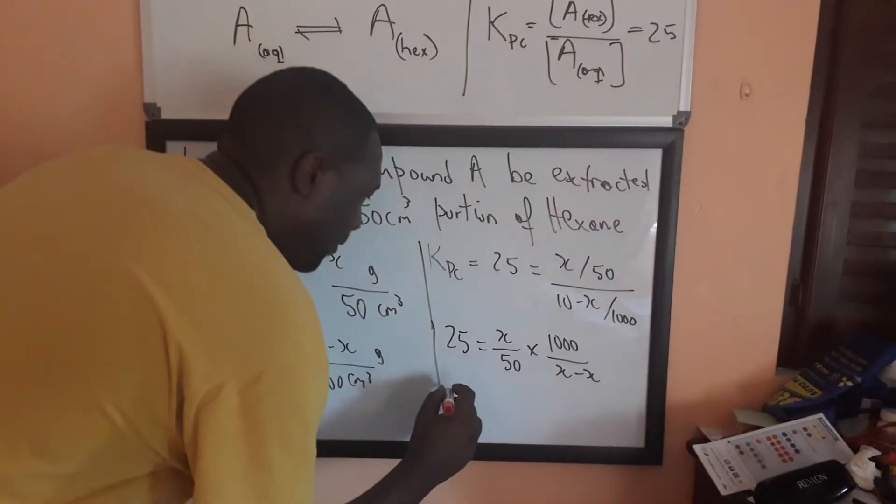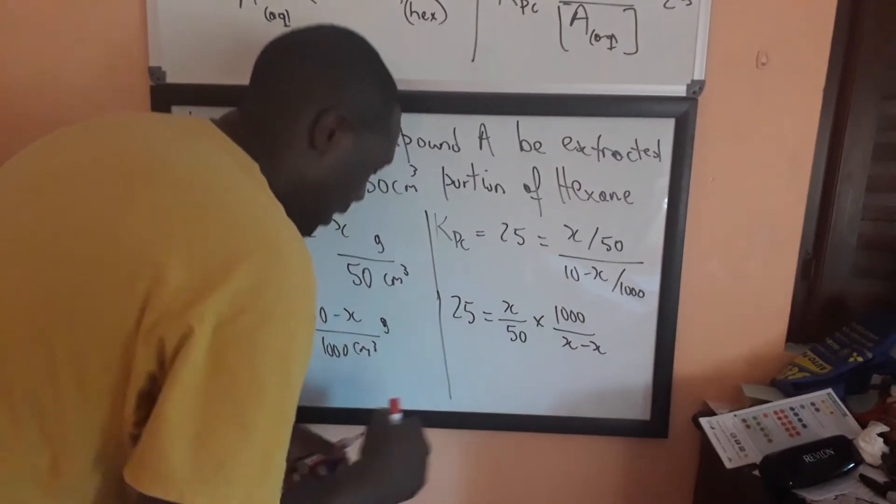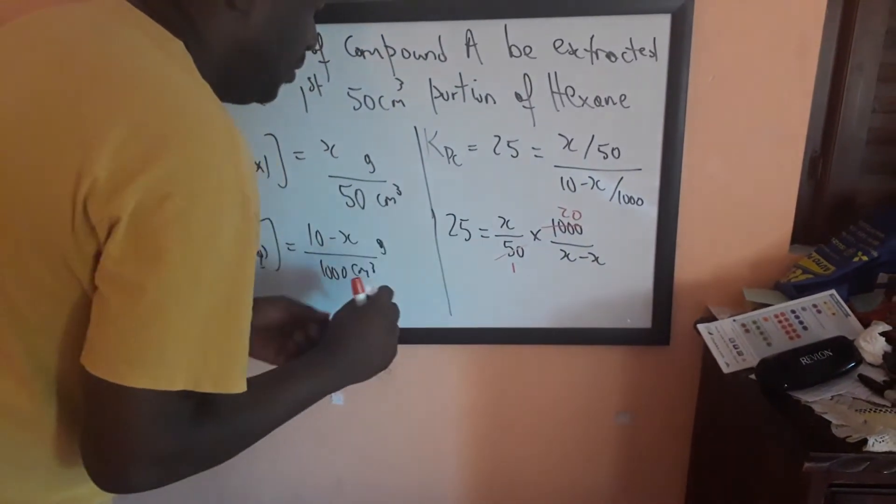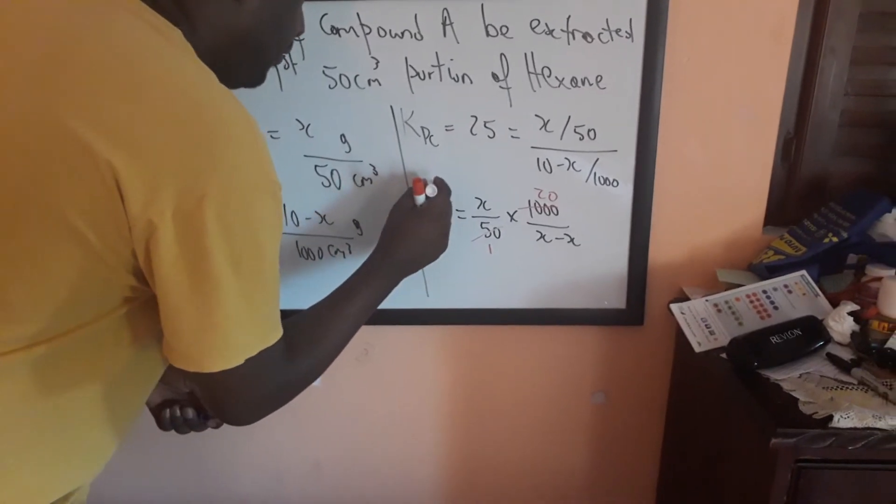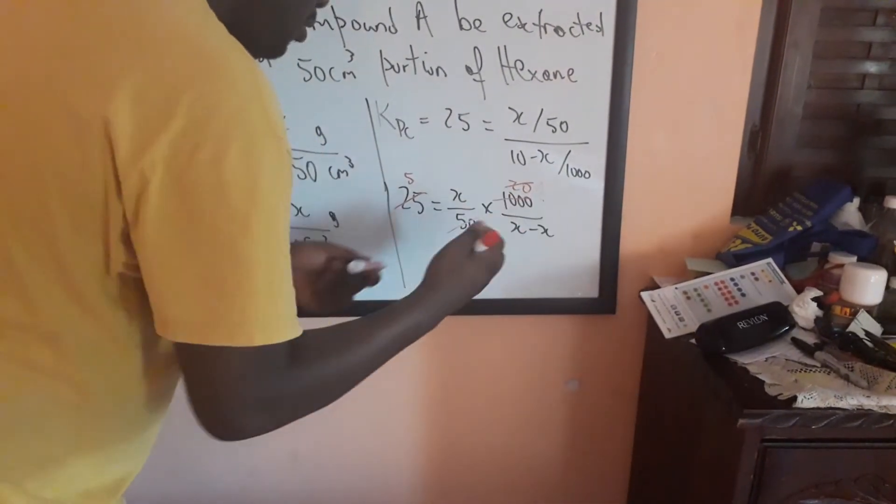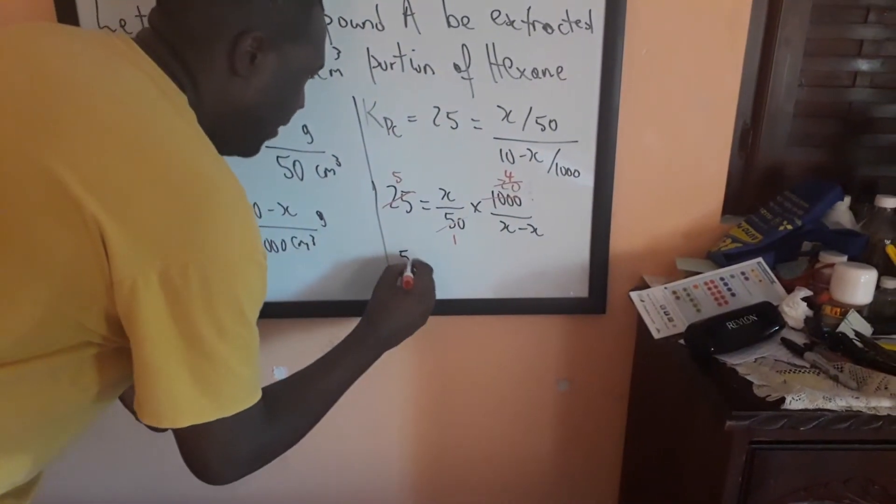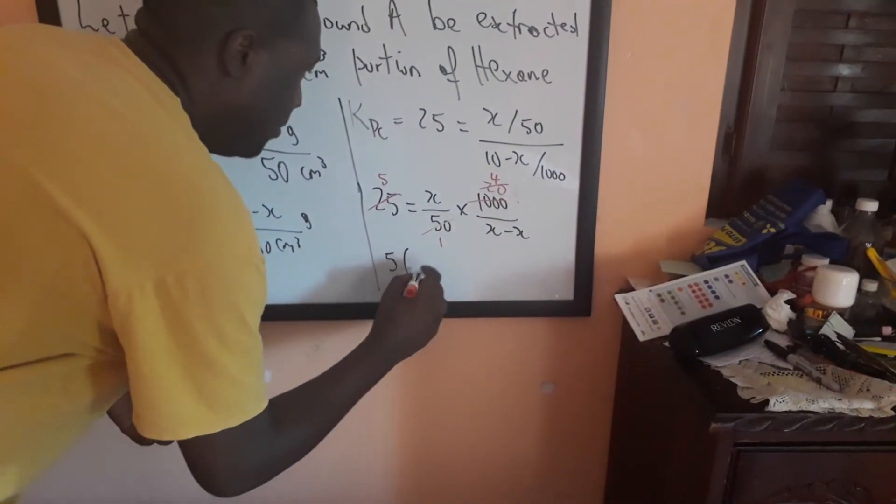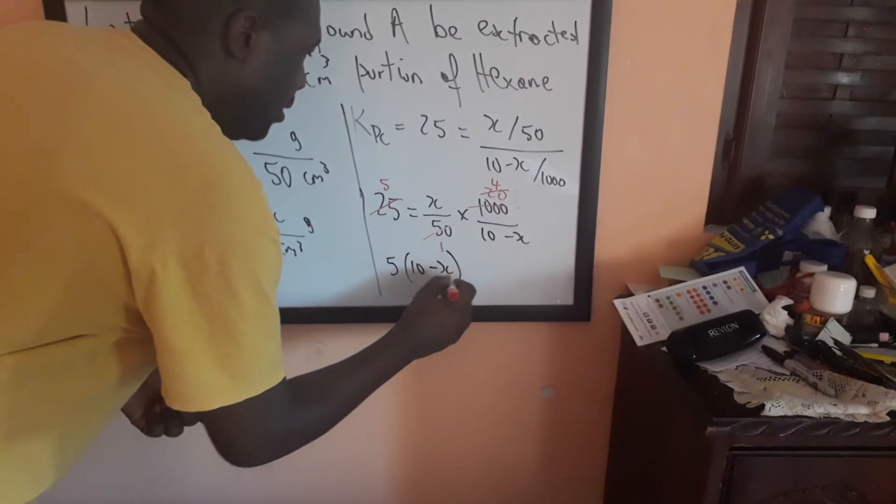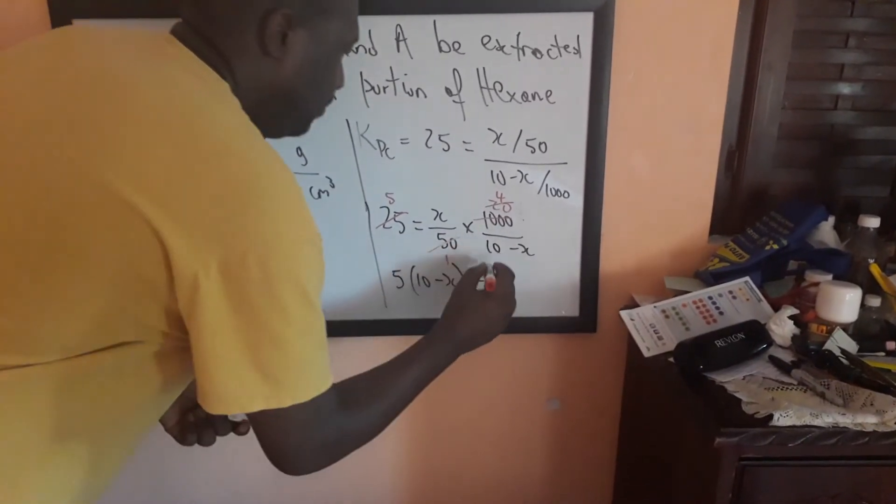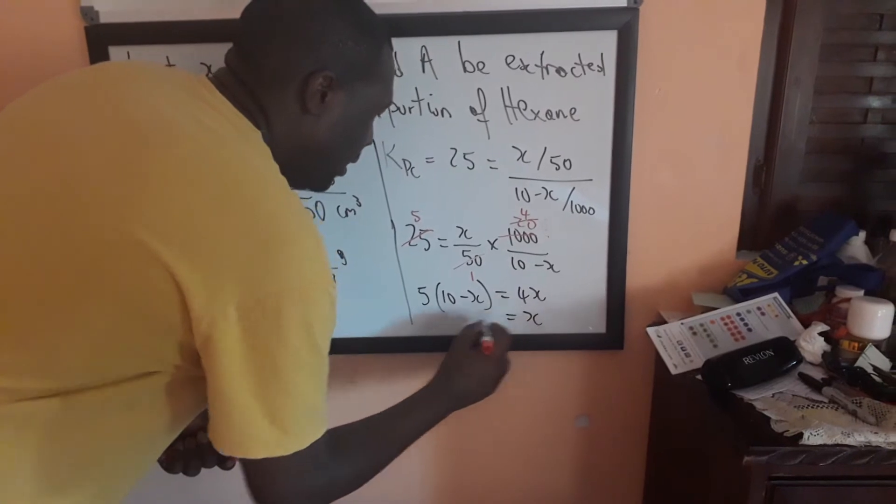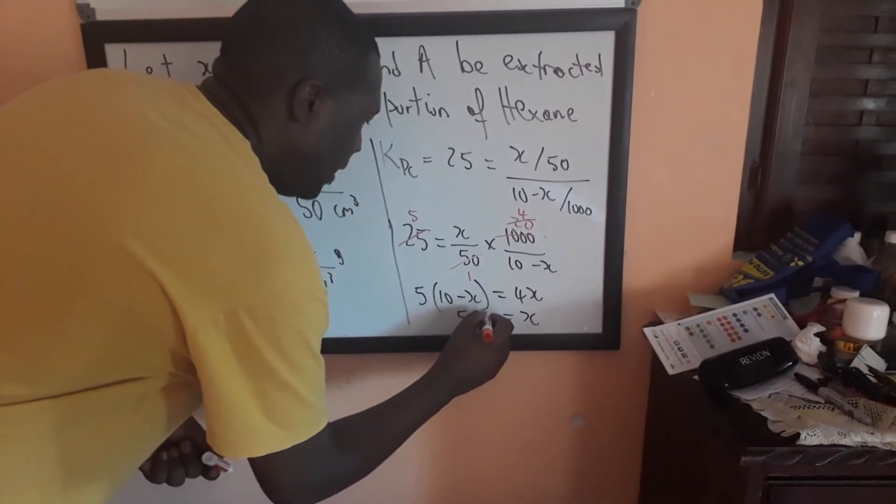And so, if we say then that we can cancel this down, that goes into that 1, that goes into that 20, and then we can go, 5 goes into that 5, 5 goes into 20 four times. And so, we can break this down as 5 times, this should have been 10 minus X here, 5 times 10 minus X is equal to 4X. And when you work that out, the value of X is 5.56 grams.